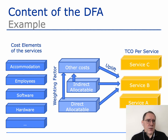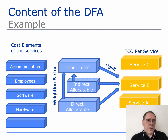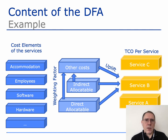There are cost elements, typically 5 to 10, and you have a weighting factor. The weighting factor describes which percentage of the indirect costs and which percentage of direct costs are calculated to compensate the other costs that are left. In that way, the total cost of ownership for service B is calculated.